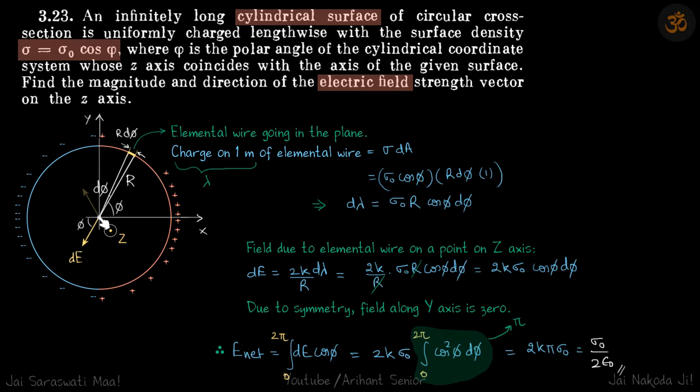Now due to symmetry, you can see that for this element field is like this. If I take a symmetrical element here, field will be like this. So vertical components will cancel out and only horizontal component will remain. Something which we saw from symmetry when we started this problem as well.